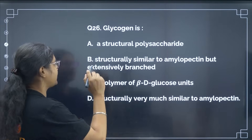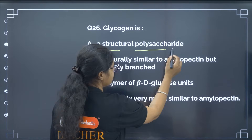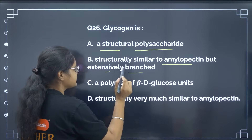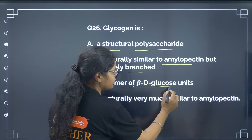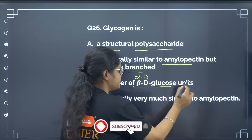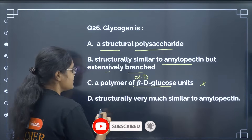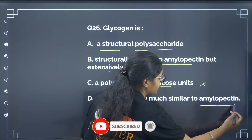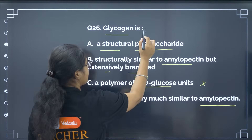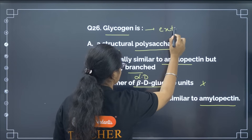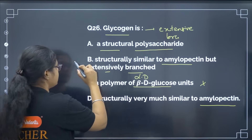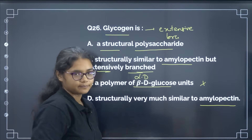Glycogen is a structural polysaccharide similar to amylopectin but it is extensively branched. The statement that it is made up of beta-D glucose units is incorrect — it is made up of alpha-D glucose units. Structurally it is very similar to amylopectin, but glycogen has extensive branching. The correct answer is option number B: it is extensively branched.